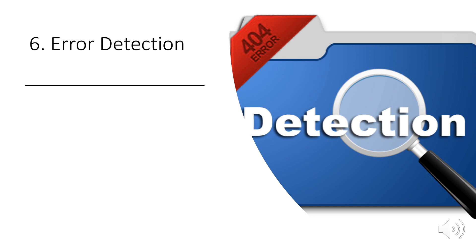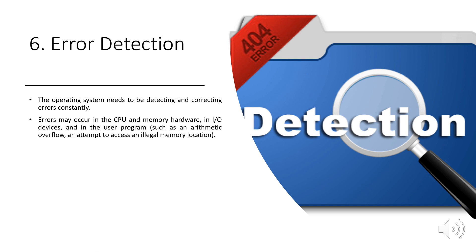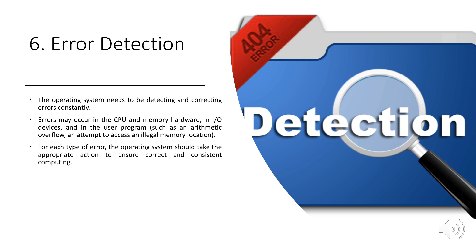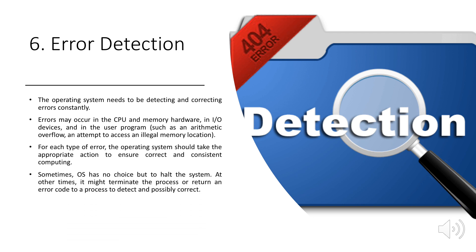Error detection: The operating system needs to be detecting and correcting errors constantly. Errors may occur in the CPU and memory hardware, in I/O devices, and in the user program, such as arithmetic overflow or an attempt to access an illegal memory location. For each type of error, the OS should take appropriate action to ensure correct and consistent computing. Sometimes the OS has no choice but to halt the system; at other times, it might terminate the process or return an error code for detection and correction.